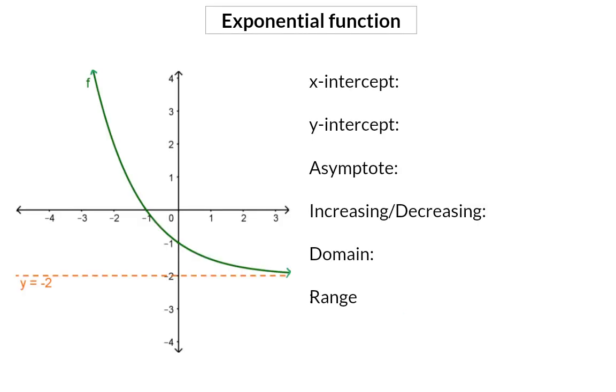For any exponential function, you should be able to identify the following. Firstly, the x-intercept, which in our example's case is given as minus 1, 0. And then also the y-intercept, which here is 0, minus 1. Then you also need to be able to identify the one horizontal asymptote, and in our example, that is y is equal to minus 2.